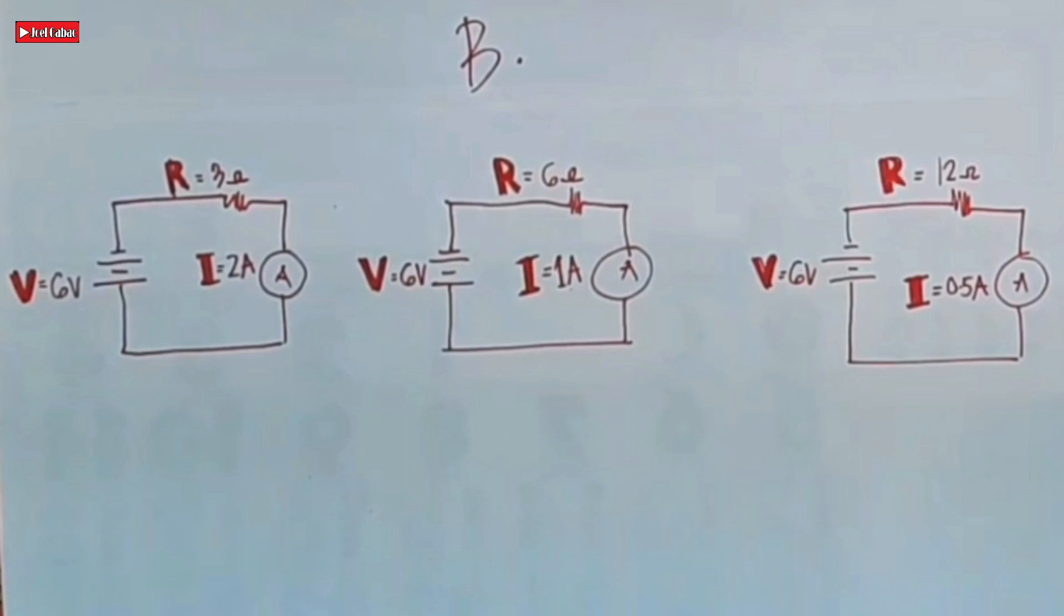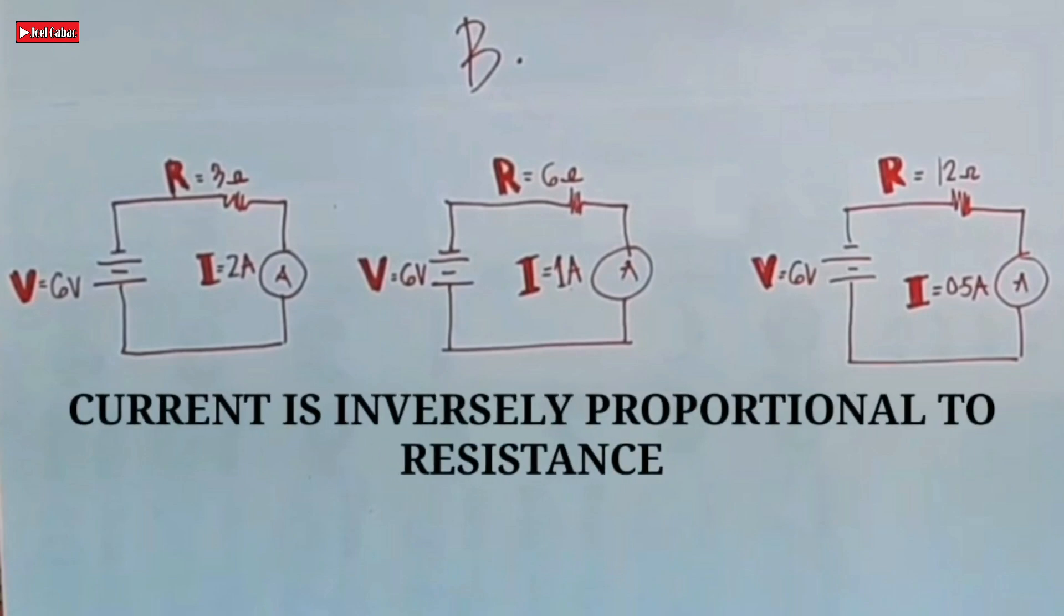The resistance is doubling: R1 equals 3 ohms, R2 equals 6 ohms, and R3 equals 12 ohms. In other words, the current is inversely proportional to the resistance.